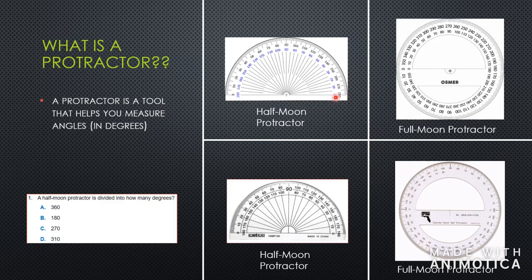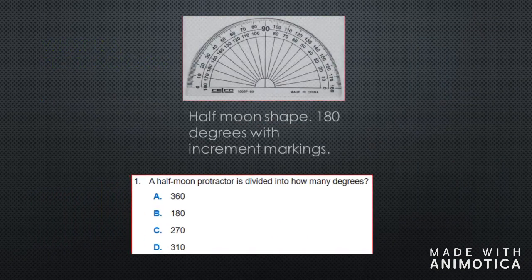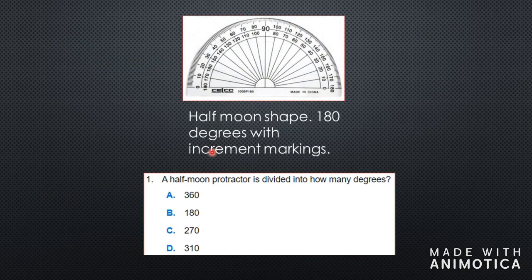The half moon protractor starts at zero and you can go clockwise or anti-clockwise. To answer the question: a half moon protractor is divided into how many degrees? If you count to the last number, you will see that it is 180 degrees.